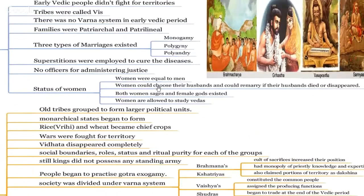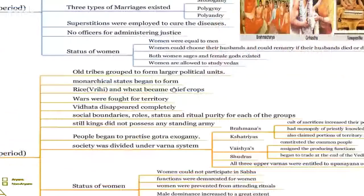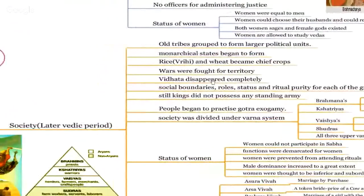Status of women in the Early Vedic age was better than the Later Vedic age. Women were equal to men — they could choose their husbands, remarry, and widows could also remarry. Female sages also existed, not only male sages. Female gods were worshipped. Women were allowed to study the Vedas. Early Vedic age is a better example of an egalitarian or woman-supportive society.